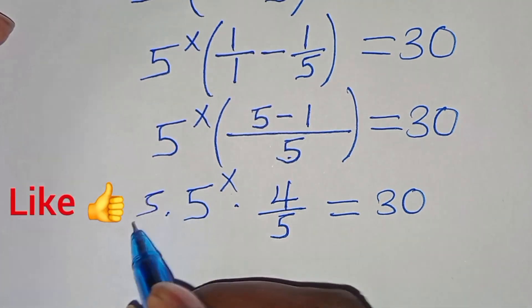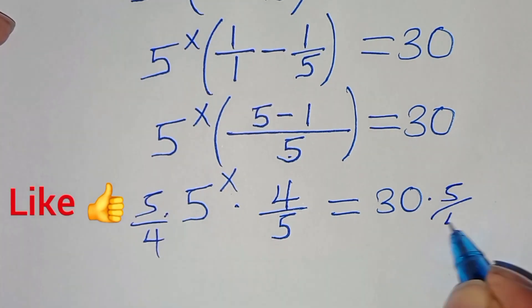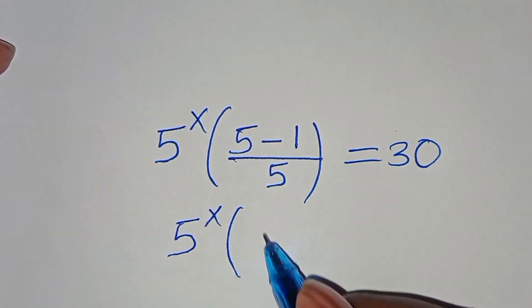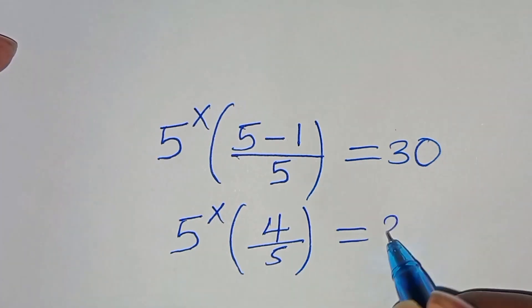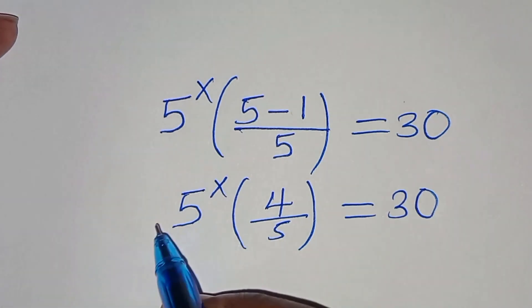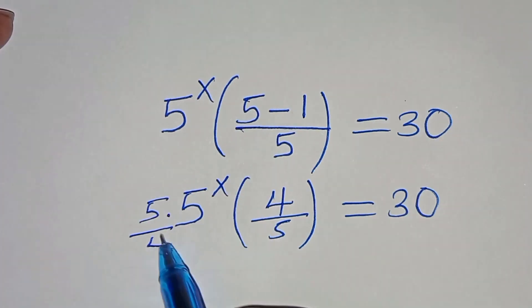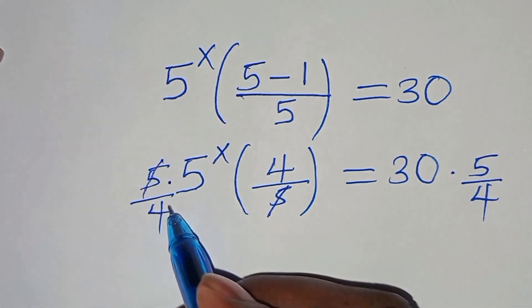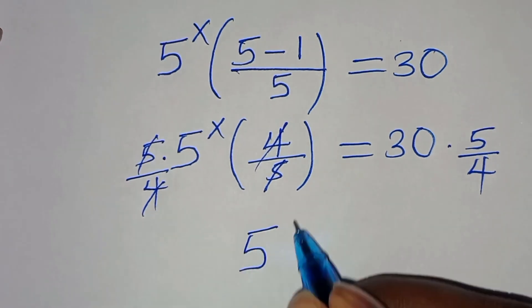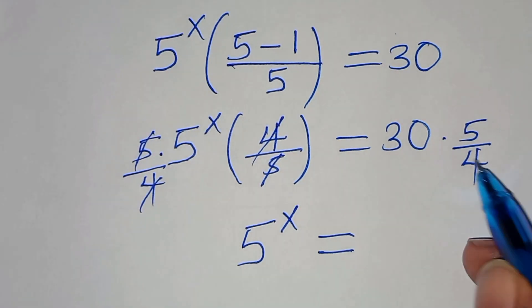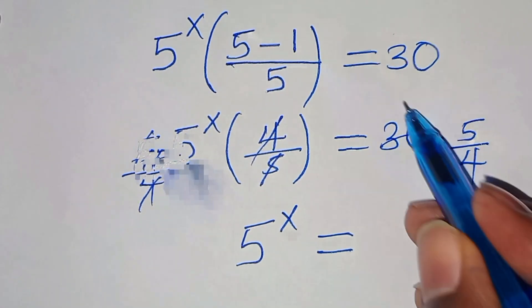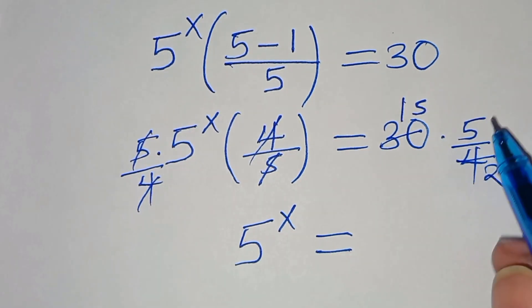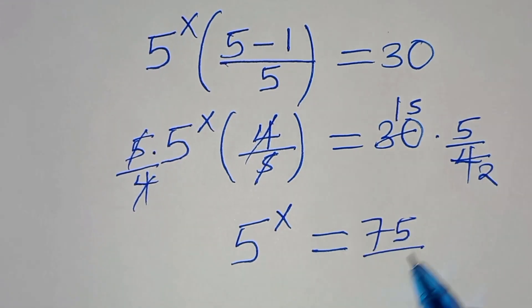The next step: let's multiply both sides by 5 over 4. Simplifying, we get 5^x equal to 30 times 5 over 4. Simplifying: 30 divided by 2 is 15, and 4 divided by 2 is 2, so 5 times 15 over 2 gives us 5^x equal to 75 over 2.